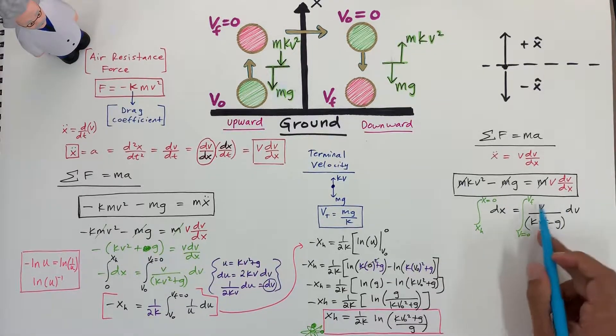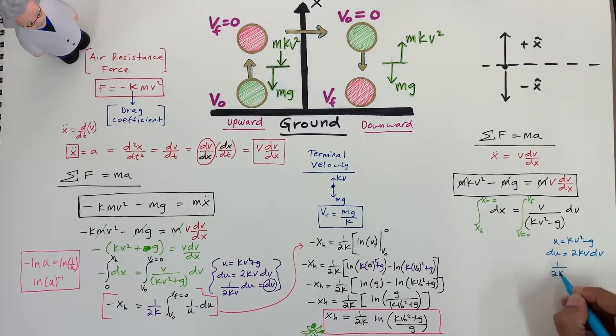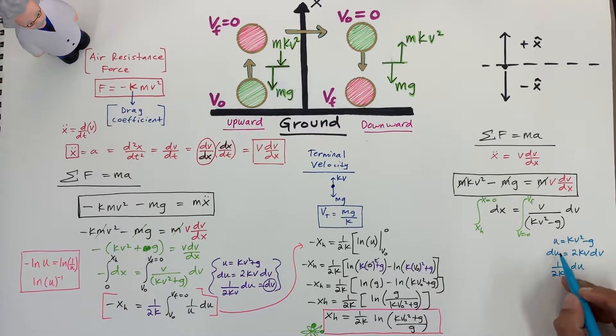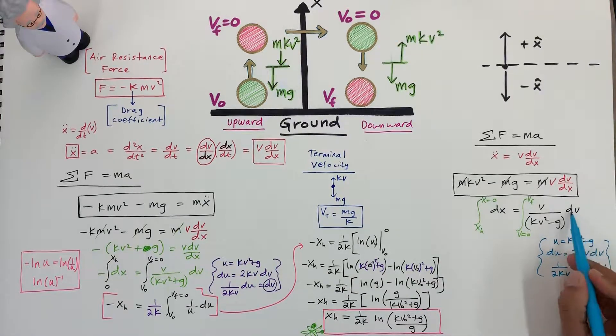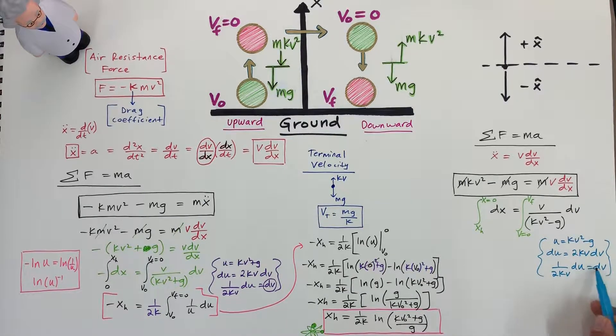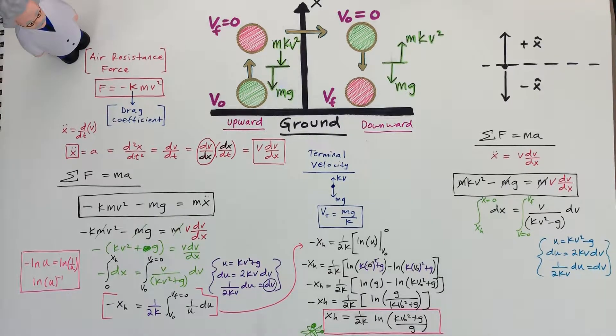We have u is equal to the bottom, which is k v squared minus g. Du is equal to 2 k v dv, and we'll divide by this to single out the dv. So we have 1 over 2 k v du is equal to dv. Notice that this dv right here, when we replace with this, we have a 1 over 2 k v. So here is going to go 1 over 2 k v. This v and this v are going to cancel out, and we're only going to be left with 1 over 2 k.